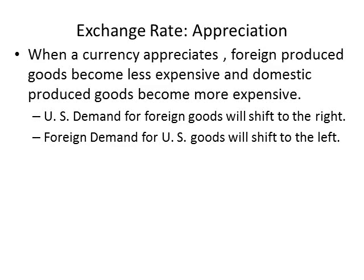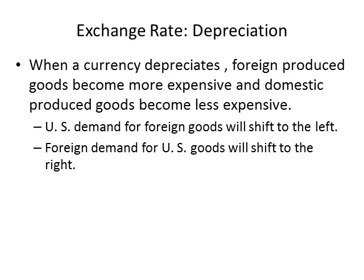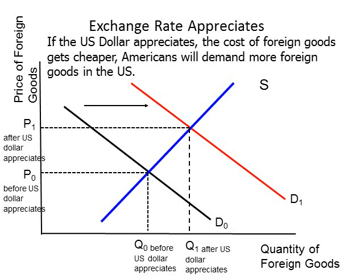When a currency appreciates, two things happen to demand. The demand for foreign goods shifts to the right because foreign goods become cheaper, and the foreign demand for US goods shifts to the left because American goods become more expensive. If the US dollar appreciates, Americans will buy more foreign goods, causing the demand for foreign goods to shift right, increasing both equilibrium quantity and equilibrium price of foreign goods.